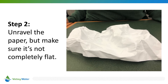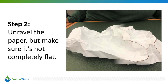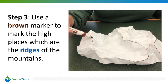Now unravel your paper, but make sure it's not completely flat. We want to make sure there are high points and low points on your map. The high points represent mountains, and the low areas in between are the valleys. Use a brown marker to mark the highest points, which form the boundaries of your watersheds. Using the side of the marker makes this part a little bit easier — remember, we just want to mark the tall points.